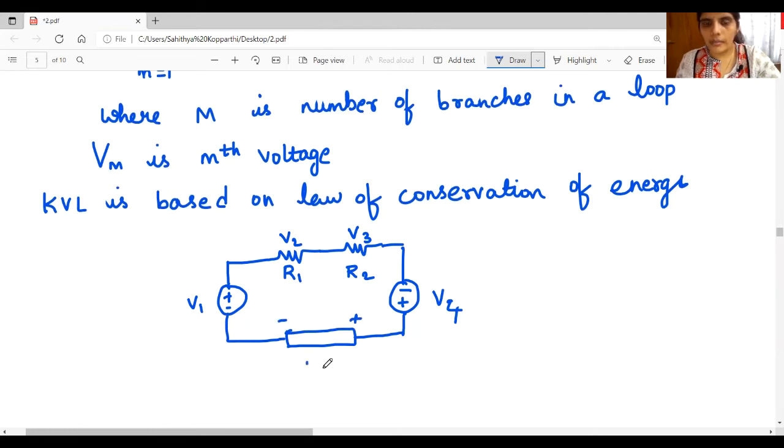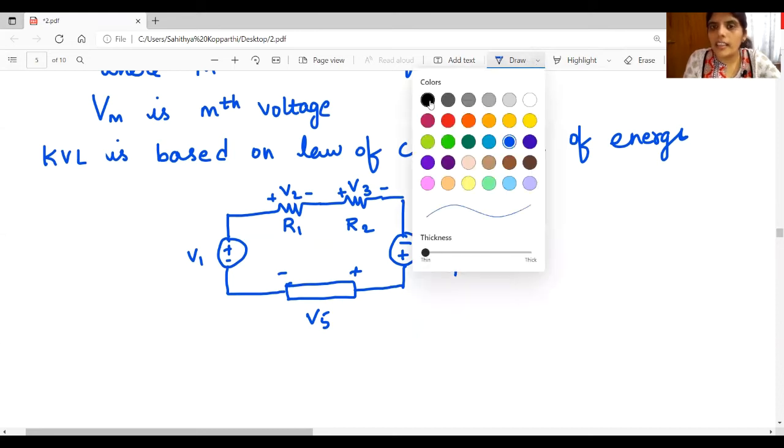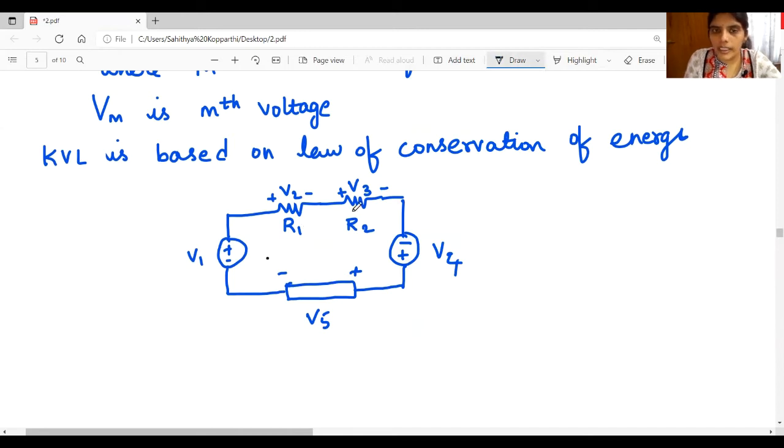I am pre-defining the polarity signs. In KVL, you can either go in clockwise direction or anticlockwise direction. And the sign of polarity is, while you are going in any direction, whatever sign of polarity you encounter first, that will be the sign of voltage.